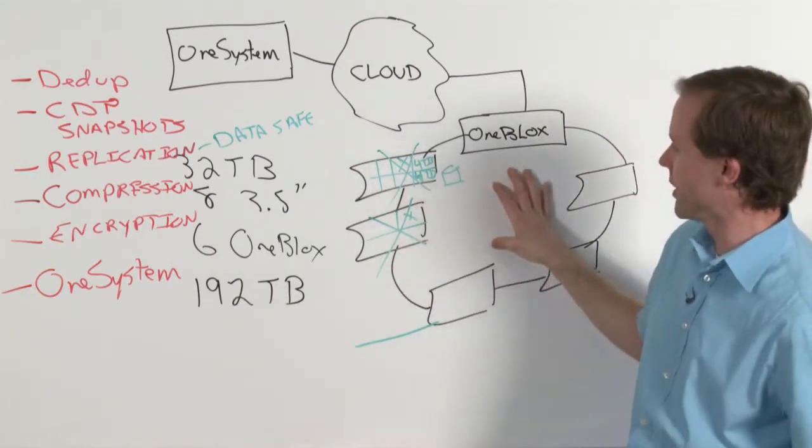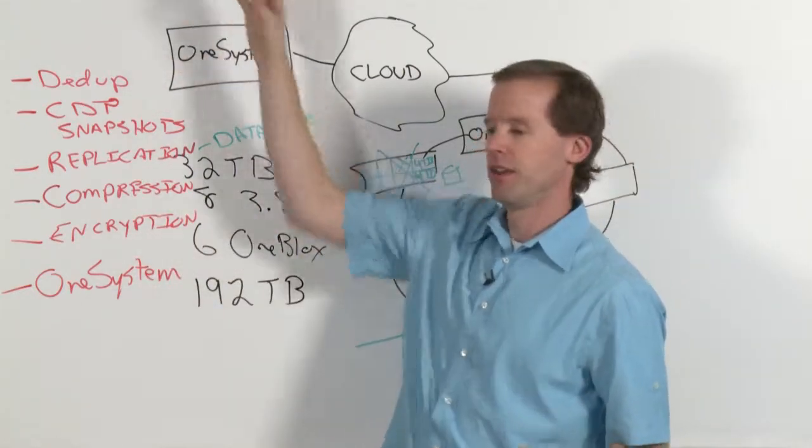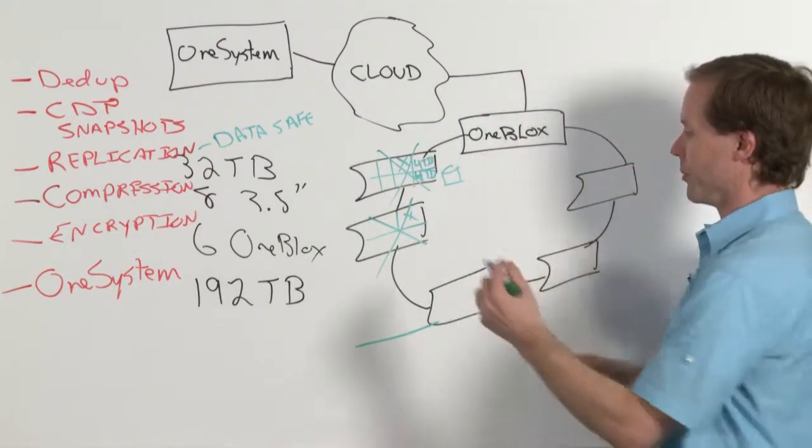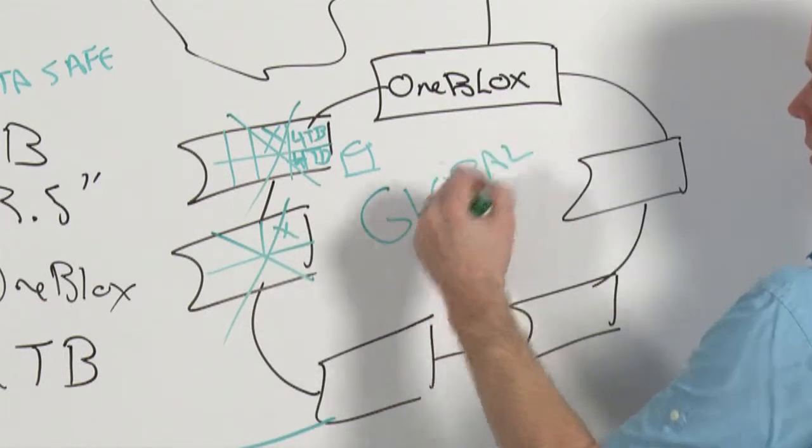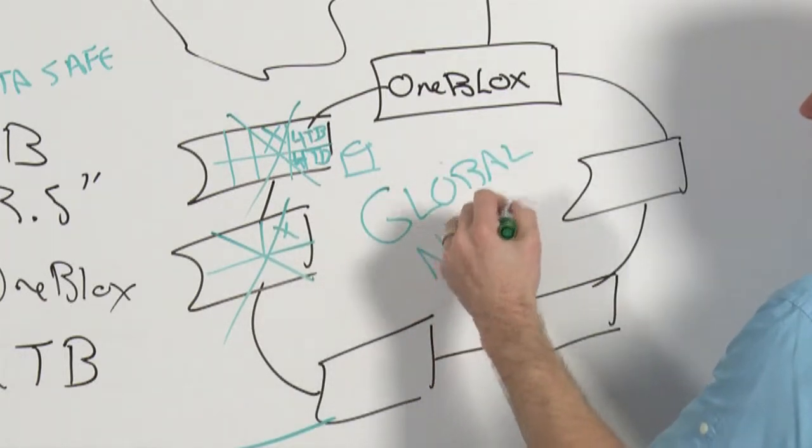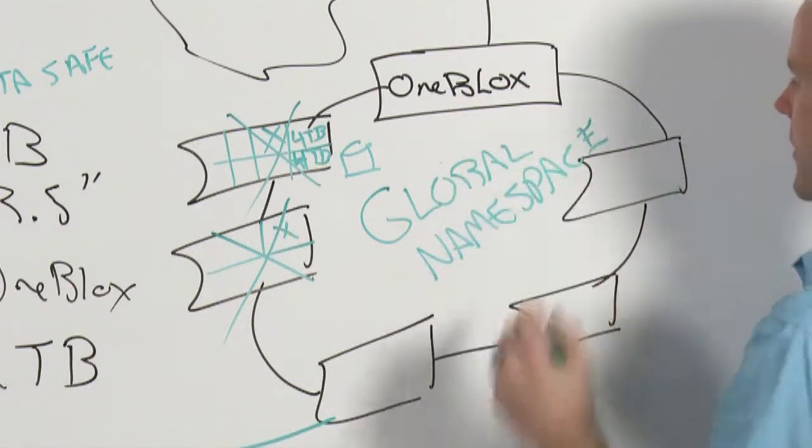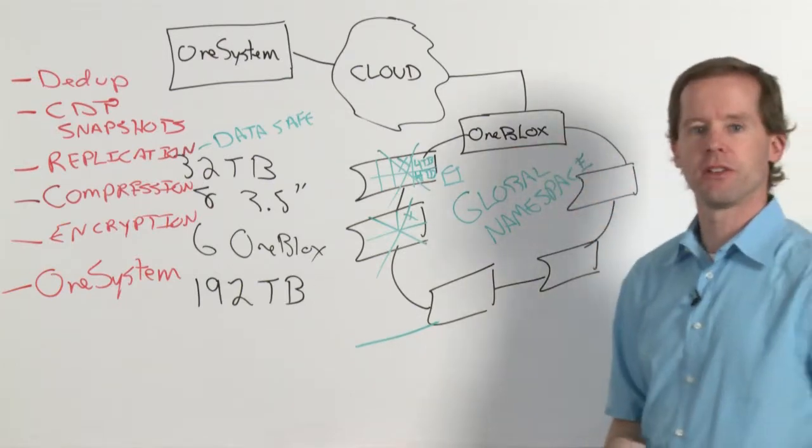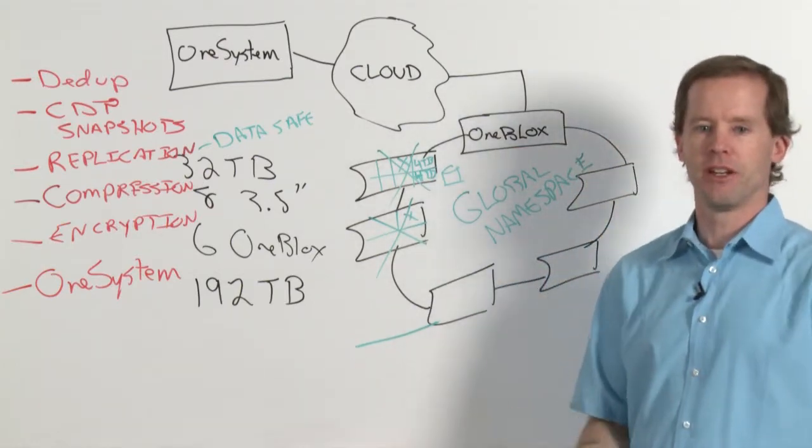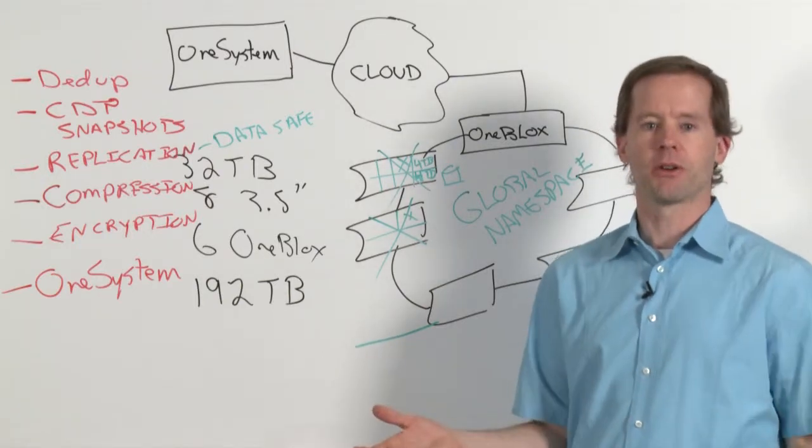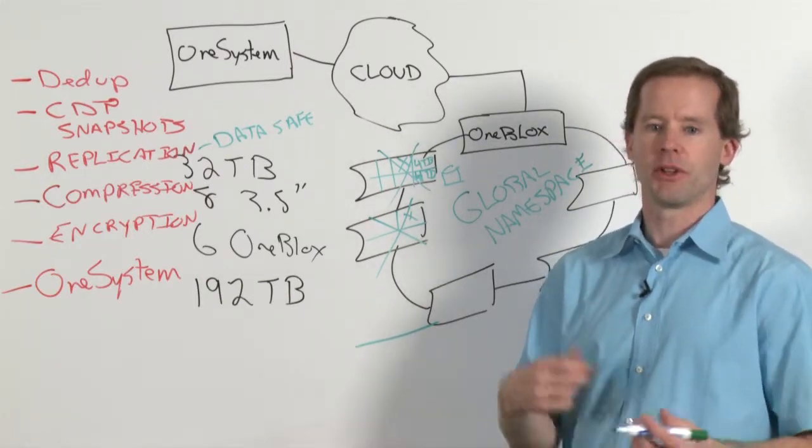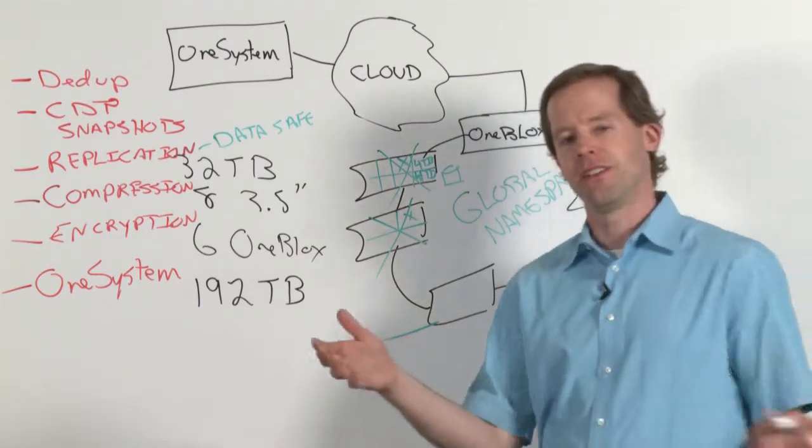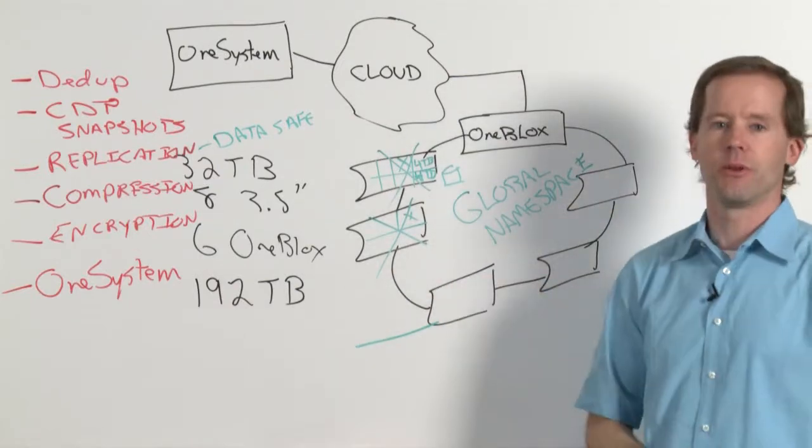And then when it comes time for managing all this, you go out into OneSystem out in the cloud, and that's where you say, okay, I want a new share to come out of this global namespace. So no matter how many nodes you add, when you add the first node, it takes about five minutes to unbox it and plug it in. And if you're capable of inserting a power cord into a receptacle, and plugging in an ethernet cable, and taking a hard drive out of the box it came in, and shoving it into a slot, you can set up a OneBlox device.